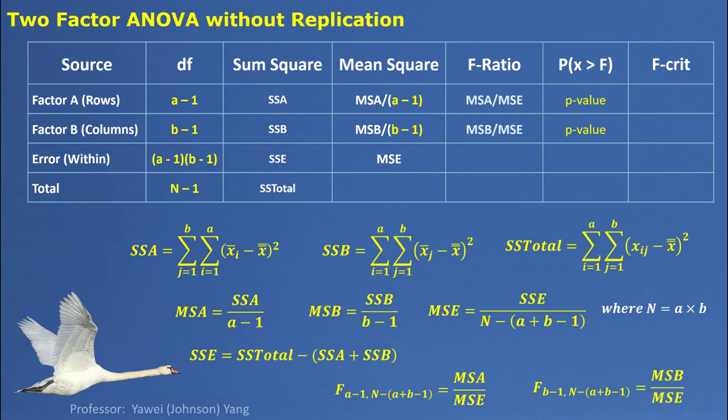Here is the summary for two-factor ANOVA without replication. The ANOVA table shows similar relationships like one-factor ANOVA — with mathematical expressions for sum square between factor A, sum square between factor B, and the sum square within and sum square total.